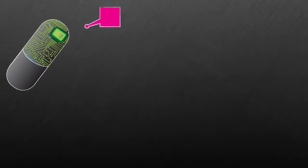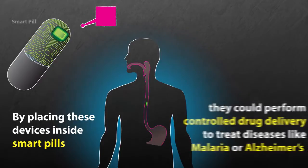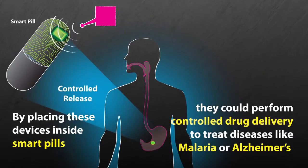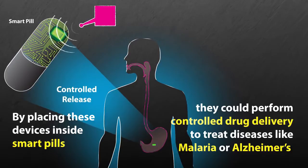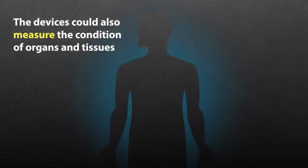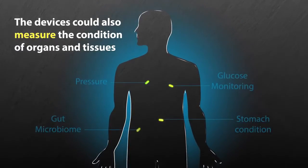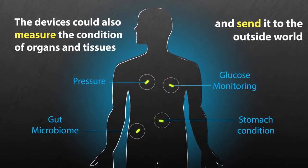For example, by placing these devices inside smart pills, they could perform controlled drug delivery inside the stomach to treat diseases like malaria or Alzheimer's. The devices could also measure the condition of organs and tissues inside the body and send it to the outside world.